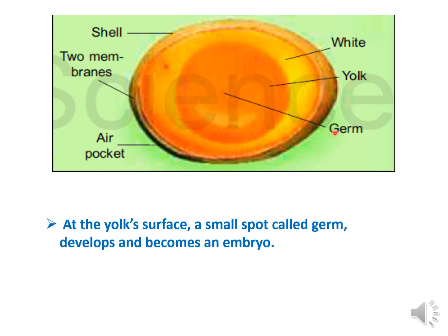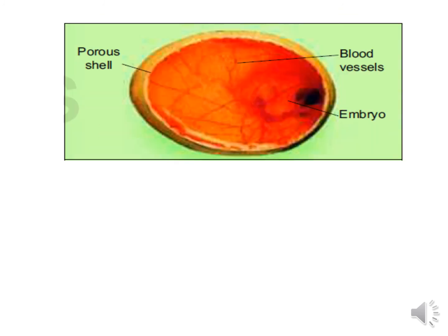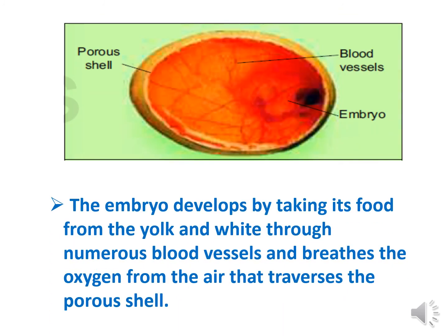A small spot called the germ develops and becomes an embryo. The embryo develops by taking its food from the yolk and the white through numerous blood vessels, and breathes the oxygen from the air that passes through the porous shell.